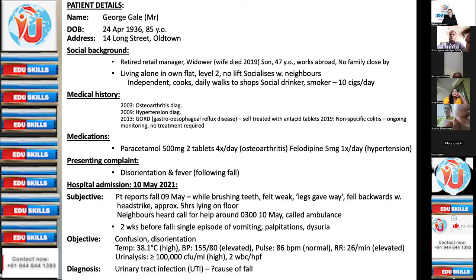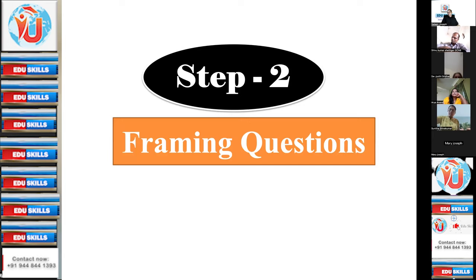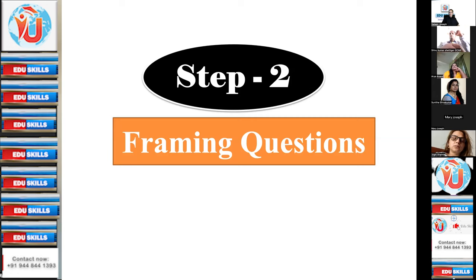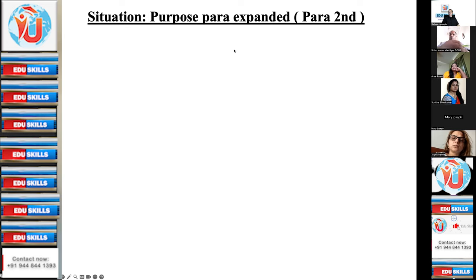Today I'll give a new method to identify the case notes. This is George Gale's case note — I've taken up a particular portion, the first portion, which is what's required for the first paragraph. Step two: framing questions. We will be framing a couple of questions only for the first body paragraph. Situation — purpose paragraph expanded, or the second body paragraph after the purpose paragraph — gives the situation, explains the situation.